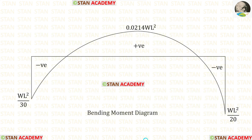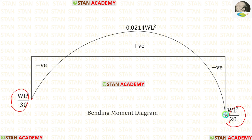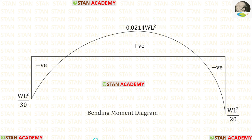Now let us draw the bending moment diagram. Using MA and MB we can plot these two end points, and using the maximum bending moment found at x = 0.5477L, we complete the diagram. This concludes the session. Thank you for watching this video.